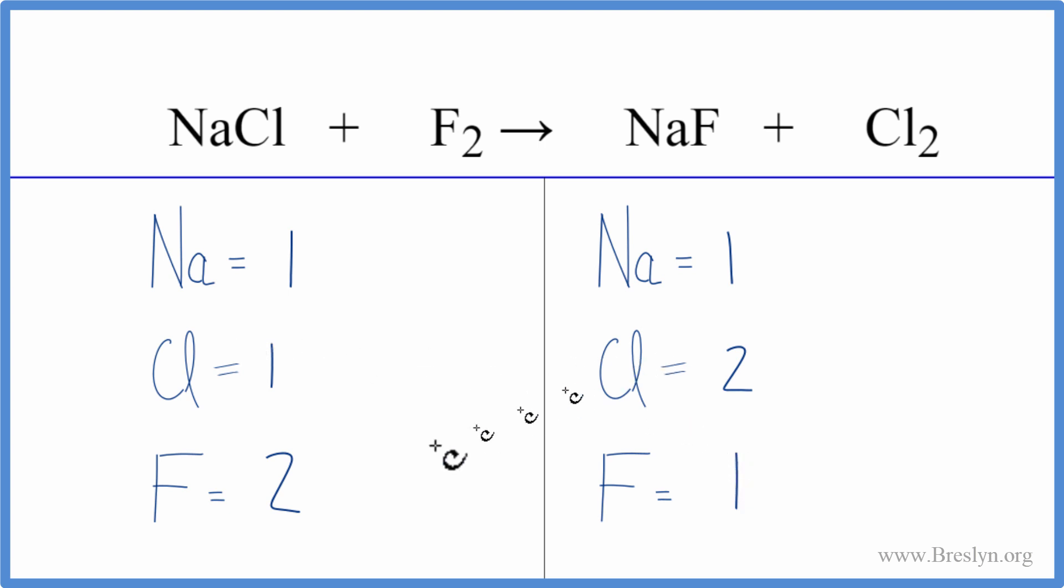So it looks like the chlorines and the fluorines, those aren't balanced. Why don't we start by putting a two in front of the NaCl? Well, this two applies to everything. So we have one chlorine times two. That'll give us two of those. Those are balanced.